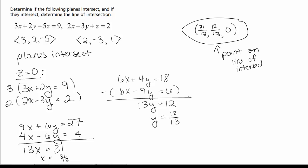To find an equation of a line we need a point and we need a vector in that direction. To find a vector in that direction, we want something that's perpendicular to both of our normal vectors, so we're going to cross our normal vectors.